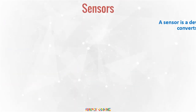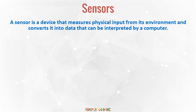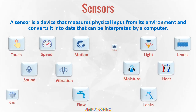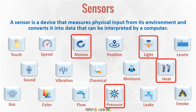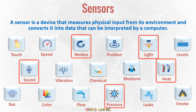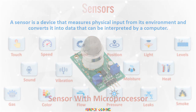First is the sensor. It is a device that measures physical input from its environment and converts it into data that can be interpreted by a computer. There are various types of sensors available now, for example, sensing motion, temperature, pressure, light, sound, etc. This sensor is typically integrated with a microprocessor-based embedded system, which can collate the data and connect to the Internet.